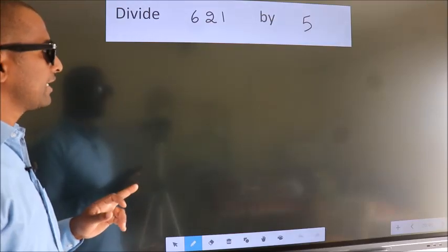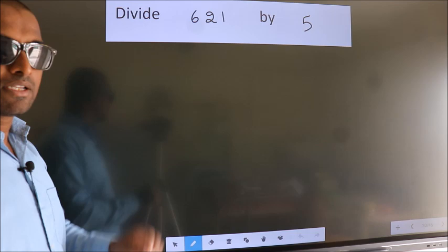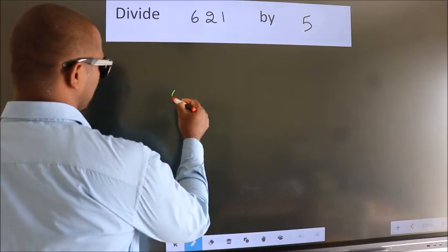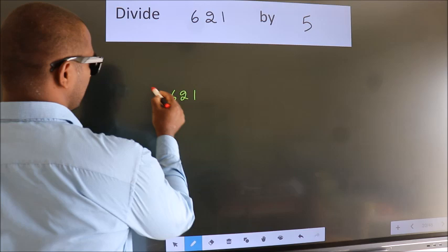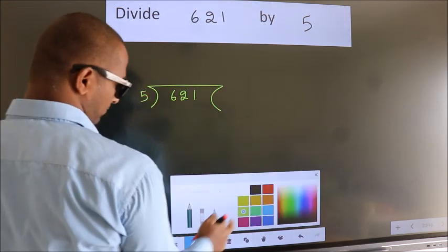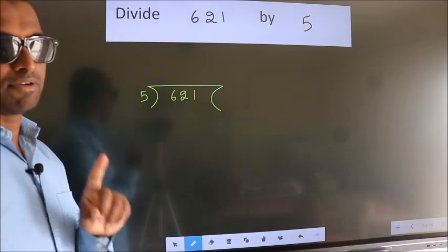Divide 621 by 5. To do this division, we should frame it in this way. 621 here, 5 here. This is your step 1.